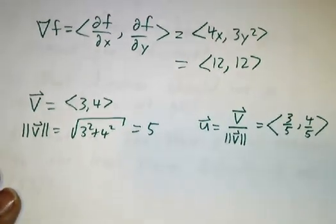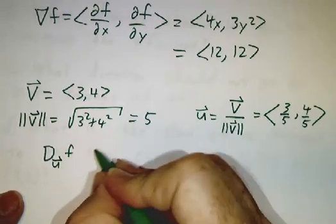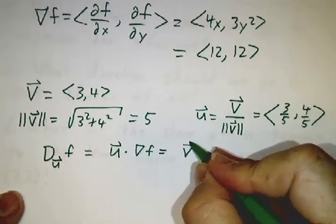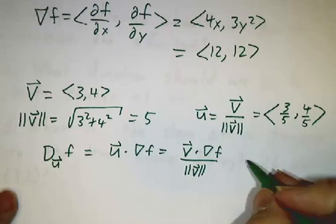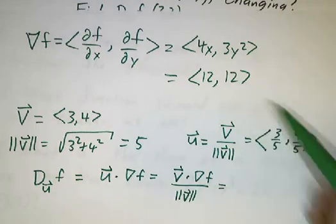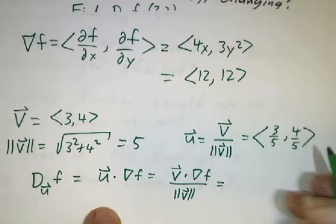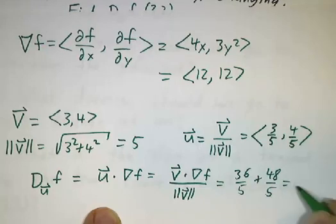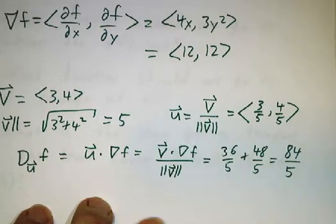Now we can figure out the directional derivative. The directional derivative in the u direction of f is u dotted into the gradient of f — or equivalently, v dotted into the gradient of f divided by the length of v. The dot product of (3/5, 4/5) with (12, 12): 3/5 × 12 = 36/5, and 4/5 × 12 = 48/5. Put together, we get 84/5.